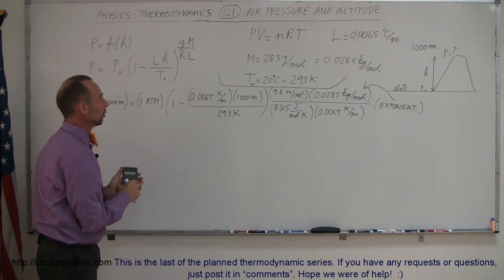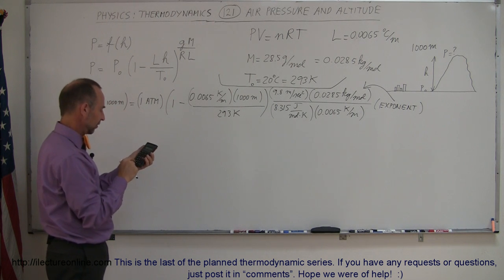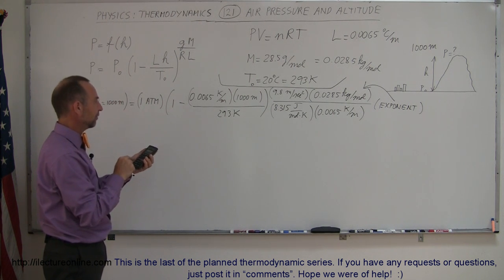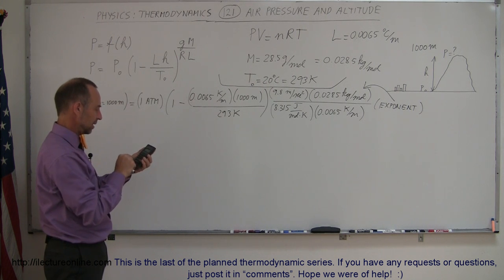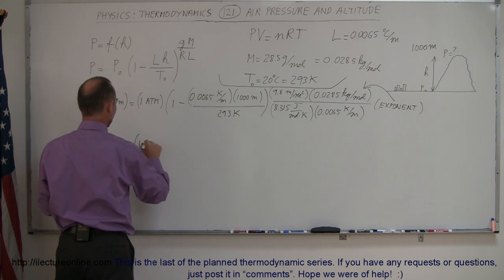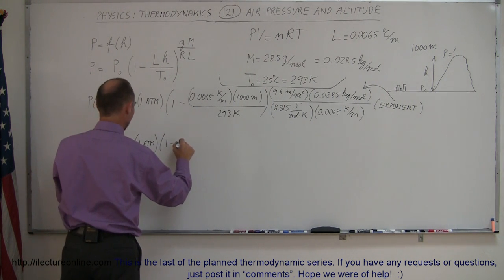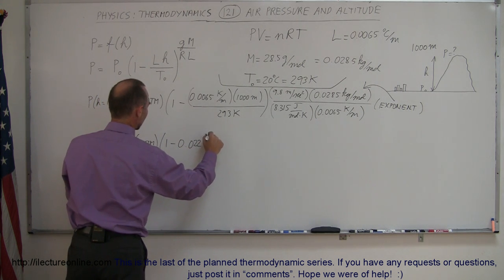All right, so let's go ahead and figure out what we're going to do. We're going to figure out what's inside the parentheses here, so 0.0065 times 1,000 divided by 293, and that equals that. So let me write that down, so that's 1 atmosphere times 1 minus 0.02218. All right, so you can see that's a little bit less than 1.